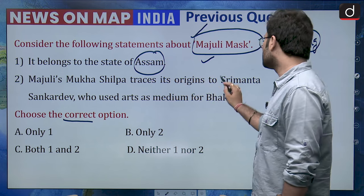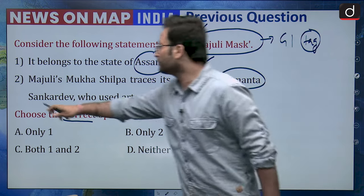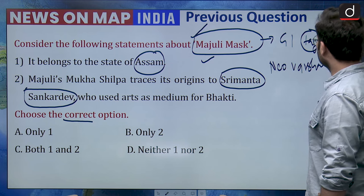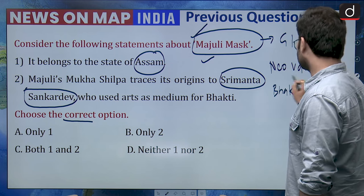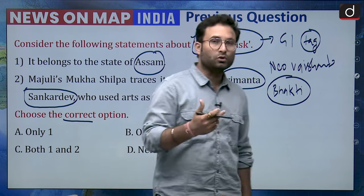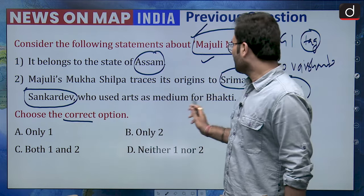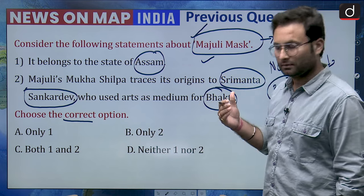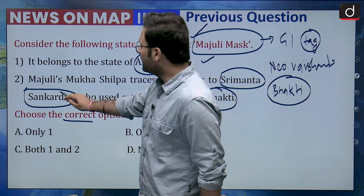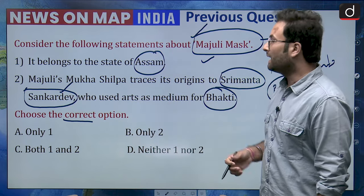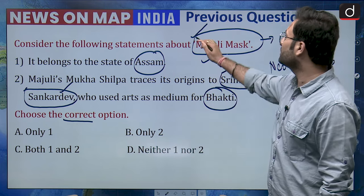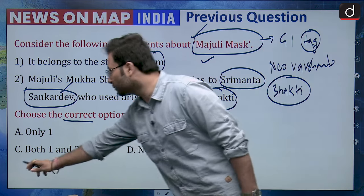Majuli Mukha Shilpa traces its origin to Sriman Sankar Deva, who was a reformer. He formed the neo-Vaisnavite sect during the Bhakti movement. During this movement, devotion or Bhakti was considered the means to Moksha, and due to this movement, this neo-Vaisnavite sect came into being in Assam, with Saint Srimanth Sankaradeva as its reformer. Both statements are correct, so option C would be your right answer.